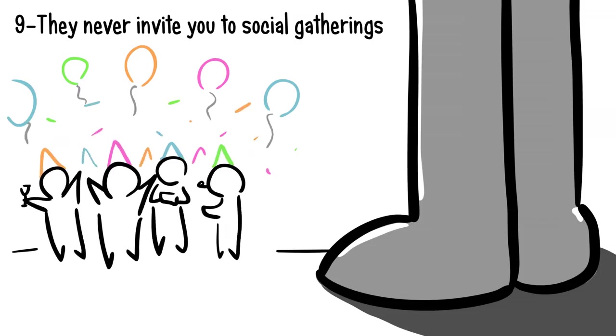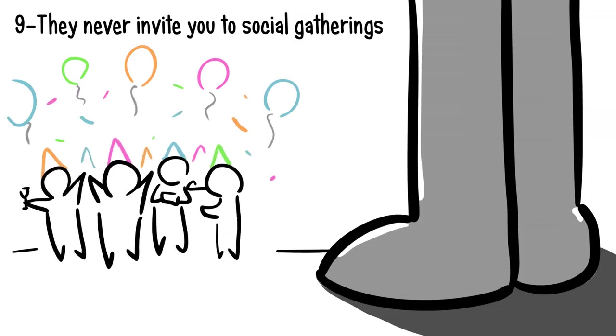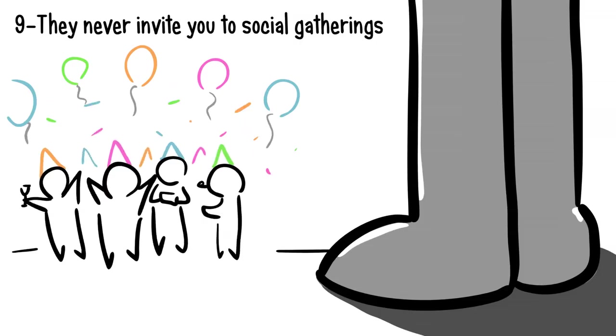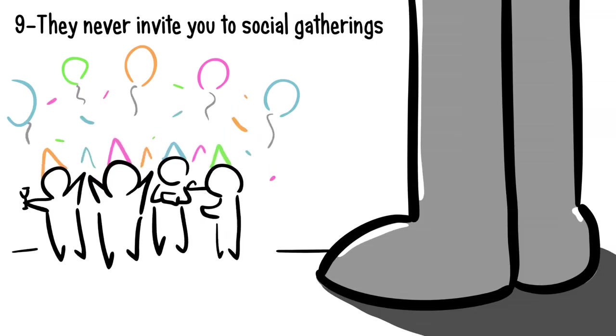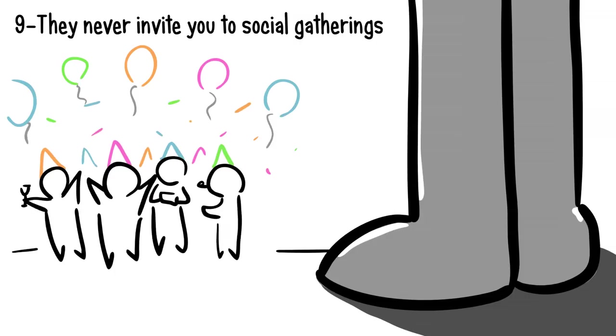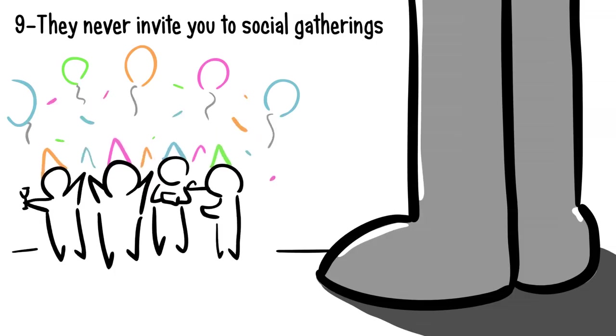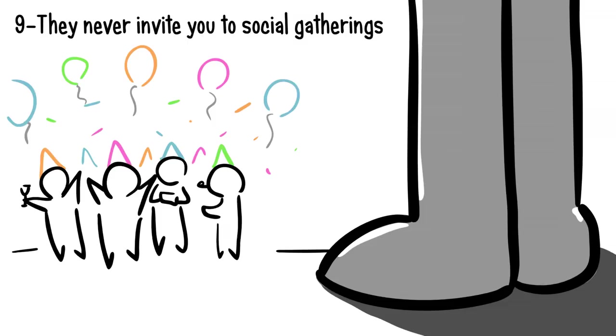Number nine: They never invite you to social gatherings. Why would you even want to be invited to someone's birthday party when you know they hate you? Still, it hurts to know, right? When you see all your friends, families, and co-workers being invited, everyone except you. It slowly becomes obvious they want nothing to do with you.